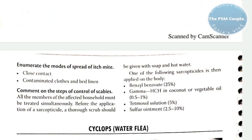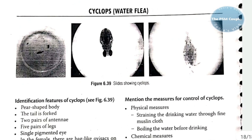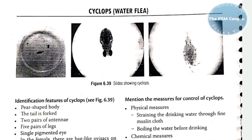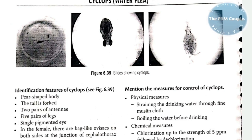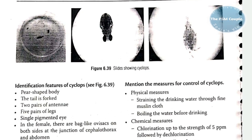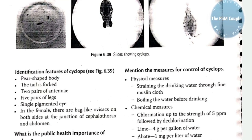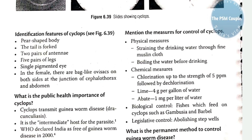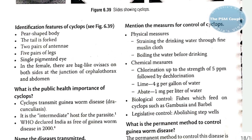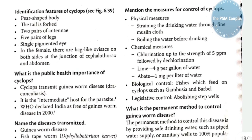The last spot is Cyclops, the water flea. Identification features: pear-shaped body with a tail — the most distinguishing feature; two pairs of antennae; five pairs of legs; a single pigmented eye. In the female, there are bag-like ovisacs on both sides at the junction of the cephalothorax and abdomen. The Cyclops transmits guinea worm disease (dracunculiasis) and serves as the intermediate host of the parasite.